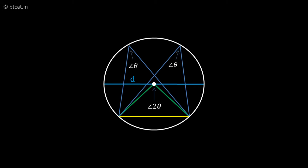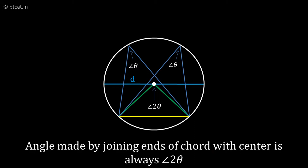So if the chord AB is making angle theta at the upper part, any point in the circumference of the circle, that AB is making 2 theta towards the center, assuming the center is also on the upper part of the chord AB. So that is one very important theorem.